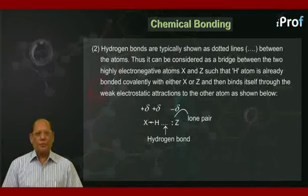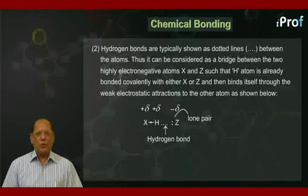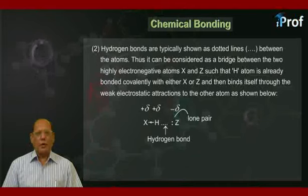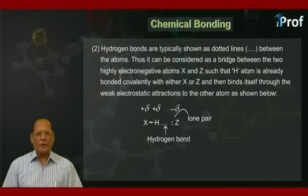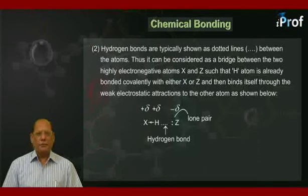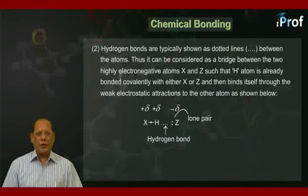Second point: hydrogen bonds are typically shown as dotted lines between the atoms. Thus, it can be considered as a bridge between the two highly electronegative atoms, say X and Z, such that the H atom is already bonded covalently with either X or Z and then binds itself through weak electrostatic attractions to the other atom, as shown below.